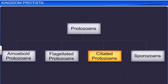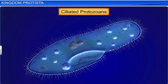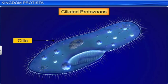The ciliated protozoans like Paramecium can be found in almost all places where there is water. They are very active since they have thousands of cilia. It is the coordinated movement of these cilia that steers the water containing their food into the gullet, which is a cavity that opens to the outside of the cell surface.